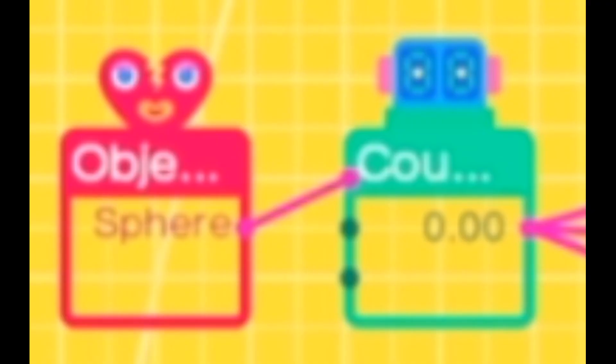To start off, you need an Object Break Nodon to go into a Counter Nodon. This Object Break Nodon should be looking for anything that you want to hurt the player, and anything that you want to hurt the player has to break on contact with the player. That's the only way that this is going to work. So now, every time the player runs into an enemy or an obstacle, then this Counter should go up by 1.